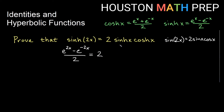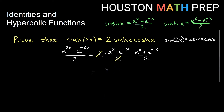On the right-hand side we have 2 times sinh(x), which is (e^x - e^(-x))/2, times cosh(x), which is (e^x + e^(-x))/2. We can reduce one of the 2s on the bottom, giving us (e^x - e^(-x))(e^x + e^(-x)) all over 2.